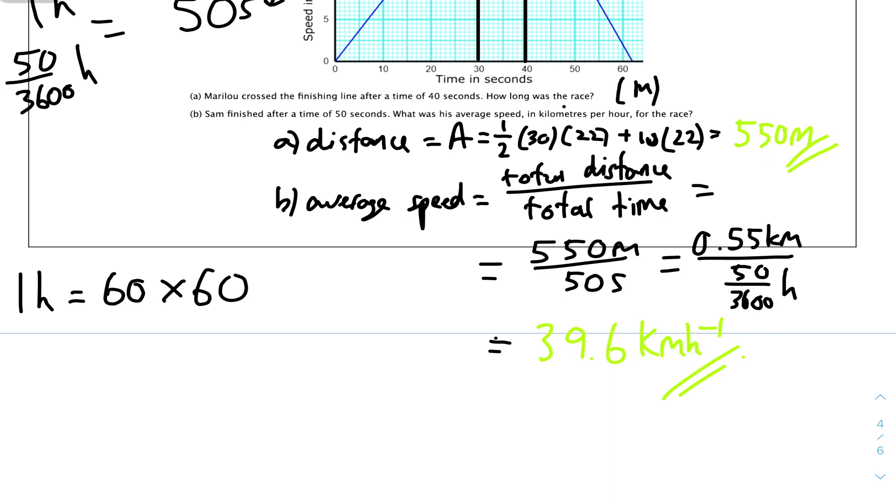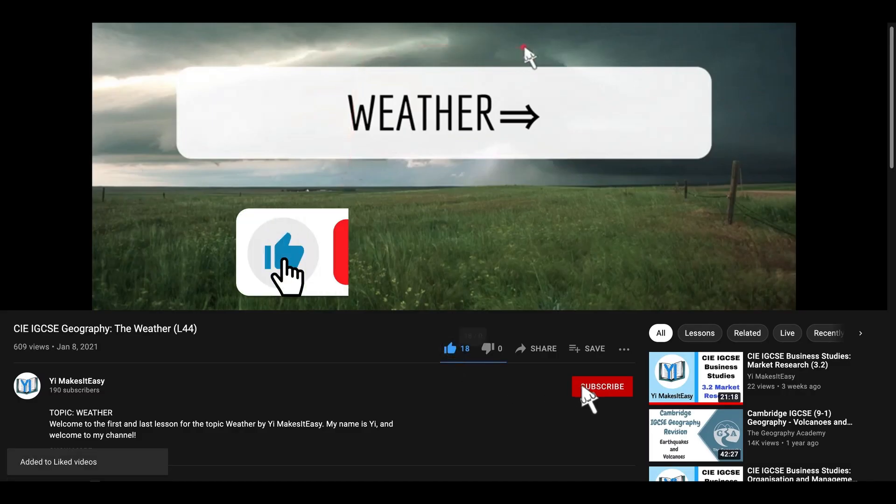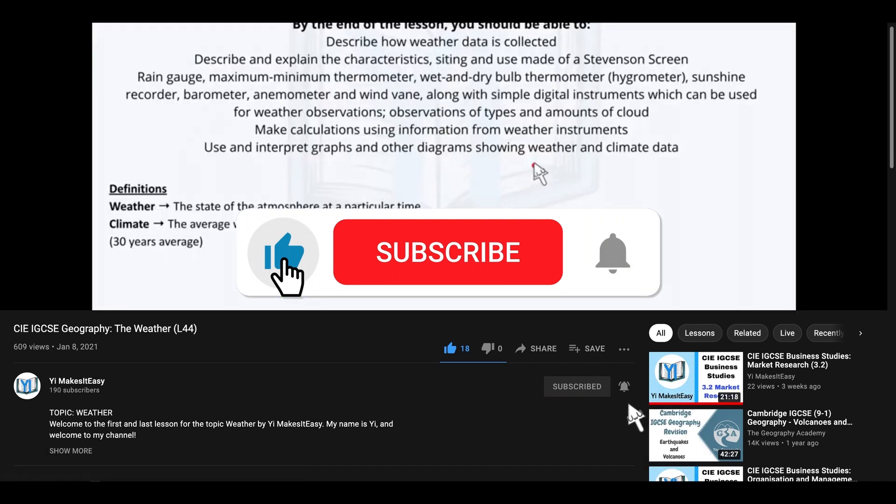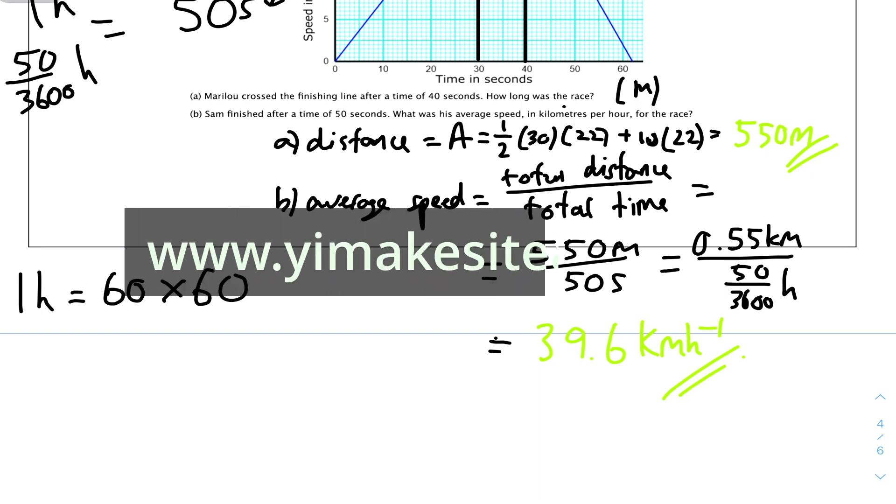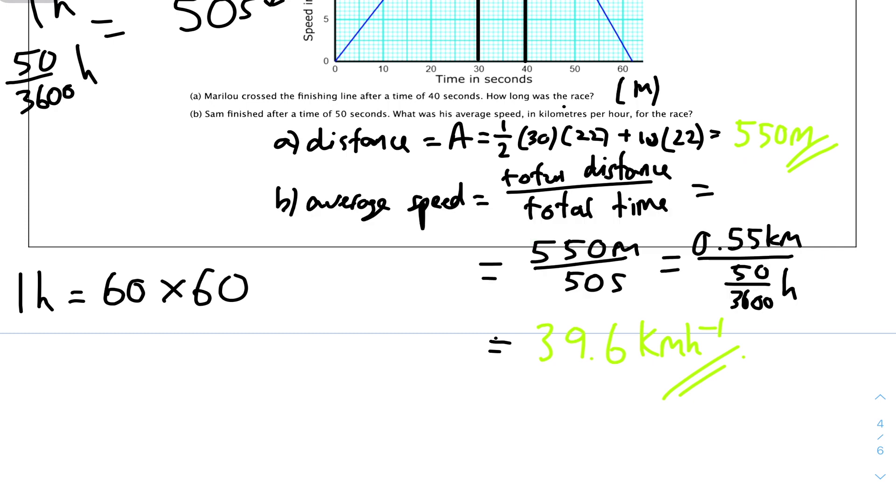And that's it for this questions video for IGCSE Additional Mathematics. Today we looked into questions for kinematics. I hope you found it useful and helpful. If you did, please leave a like and subscribe and ring the notification bell. If you have any questions regarding my video or channel or any feedback, you can comment down below and I'll reply. Check out my social media in the description, like LinkedIn or Instagram. If you need any learning or teaching resources, check out my website at www.yimrseasy.com. I hope you found it useful and I'll see you in the next video, which will be the rules and examples for vectors, the penultimate lesson for IGCSE Additional Mathematics. But until then, stay safe and happy learning.